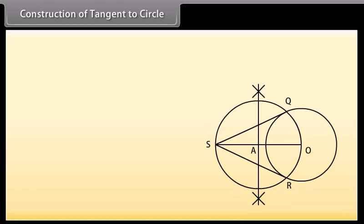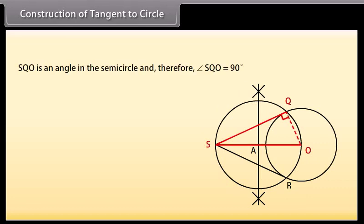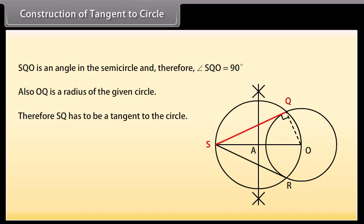Let us now check how this construction provides us the required tangents. Join OQ. We can see that SQO is an angle in the semicircle, and therefore angle SQO is equal to 90 degrees. Also, OQ is a radius of the given circle. Therefore, SQ has to be a tangent to the circle. Similarly, we can say that SR is also a tangent to the circle.